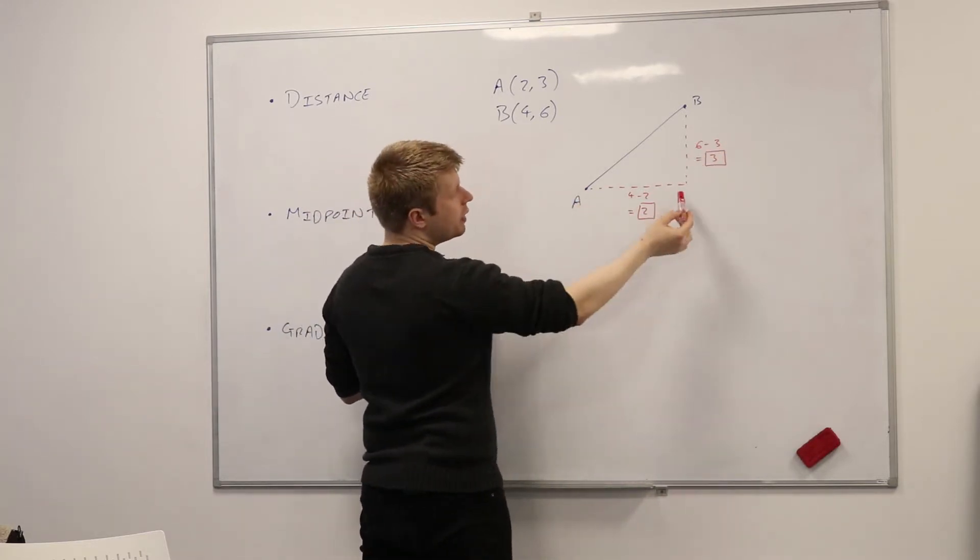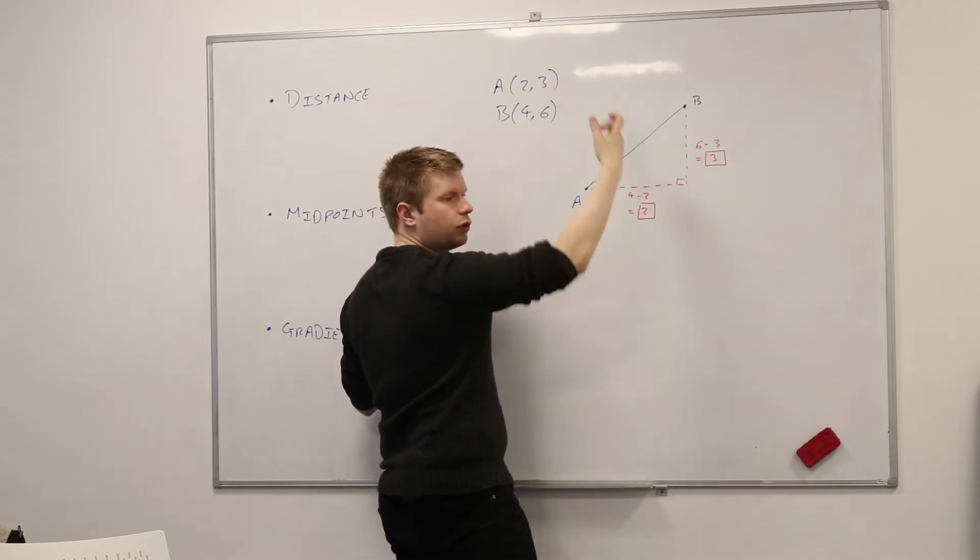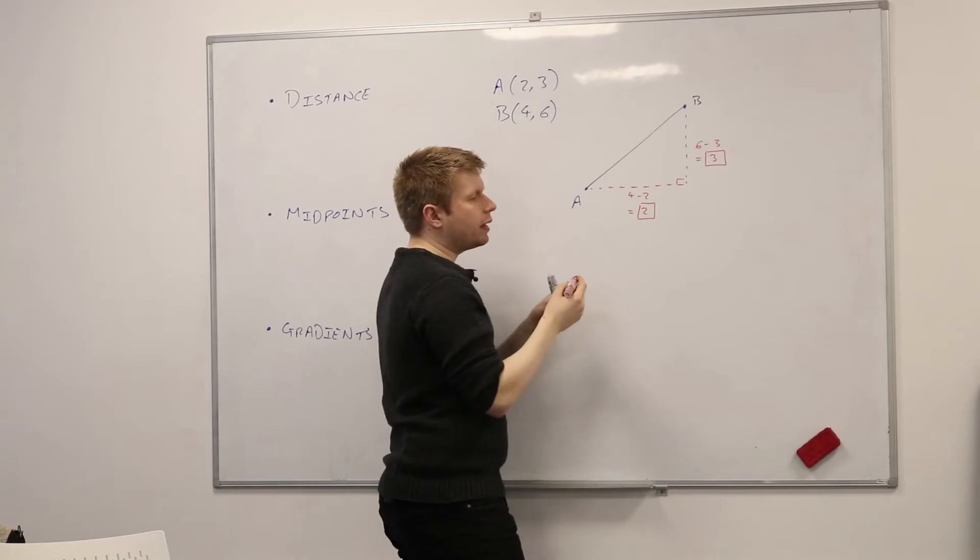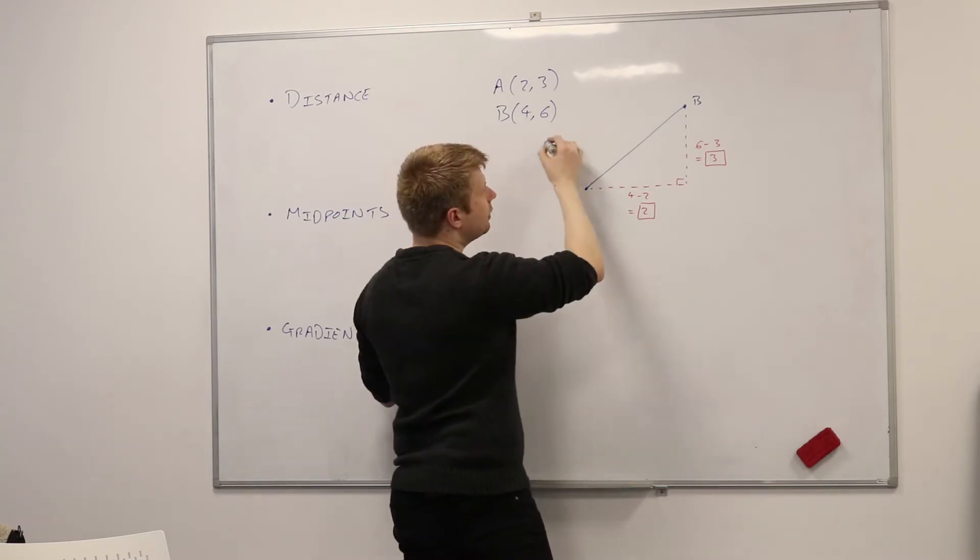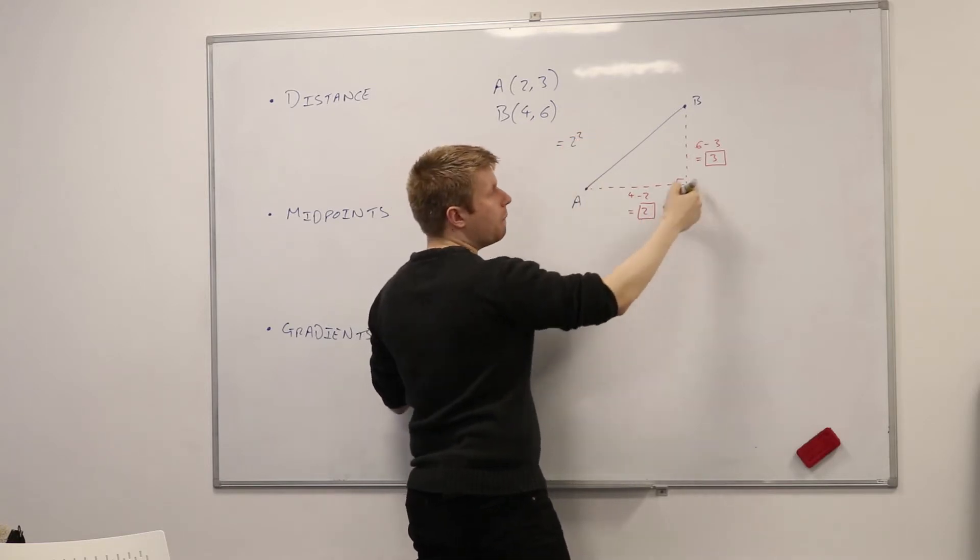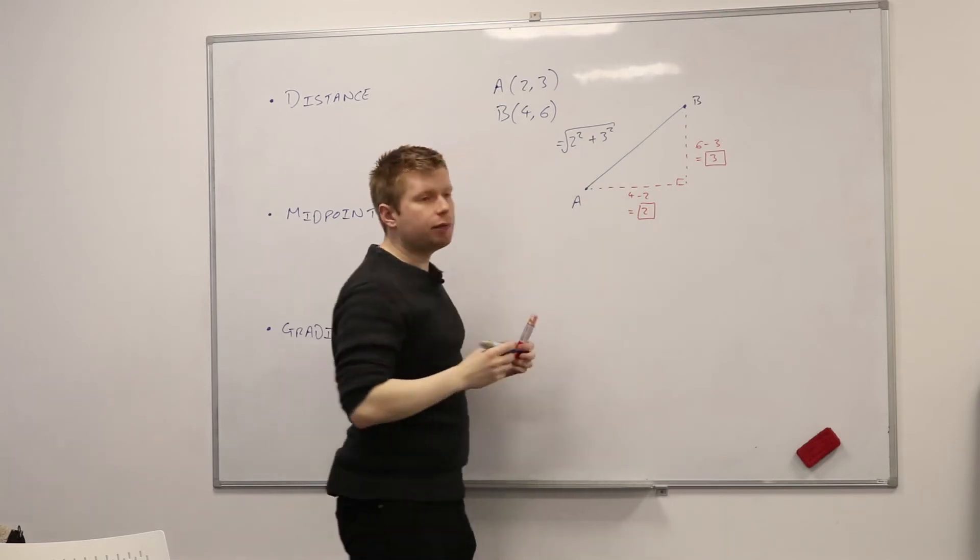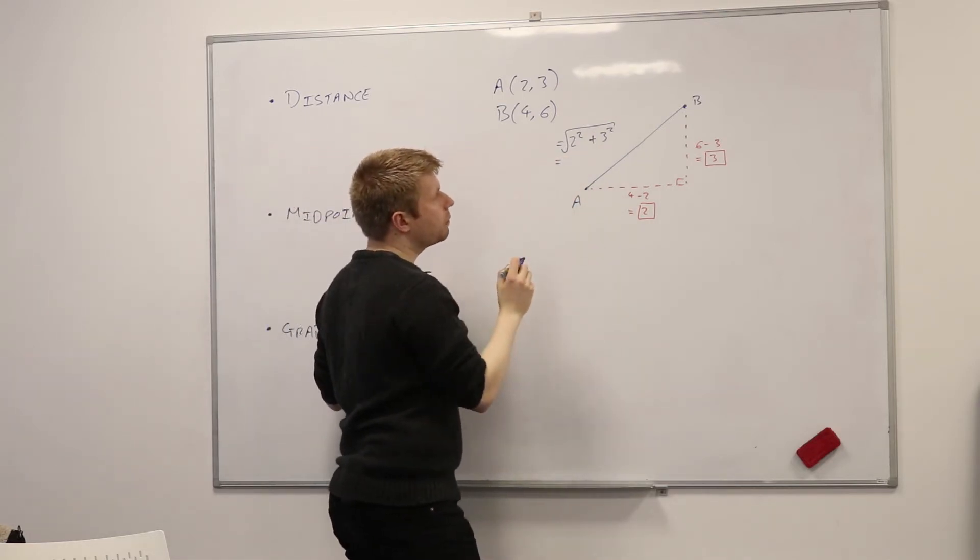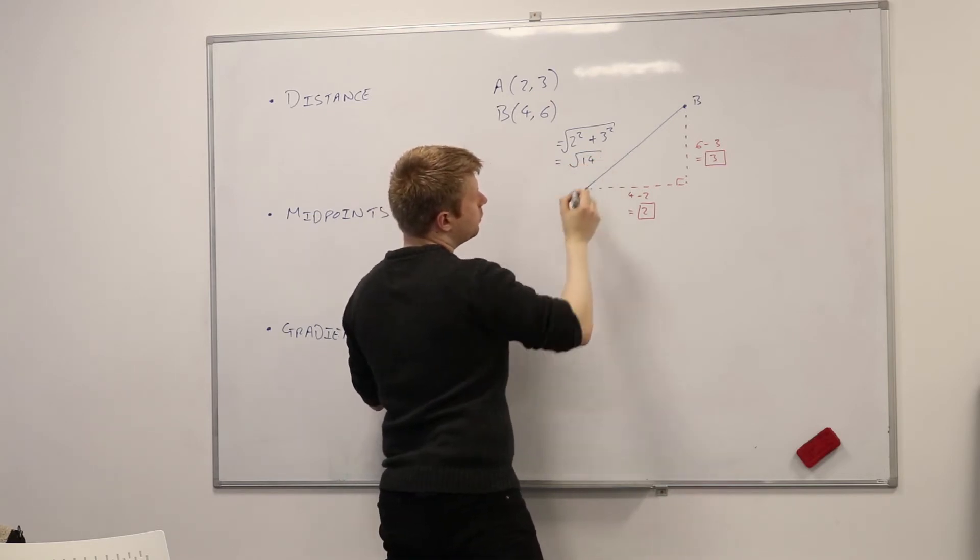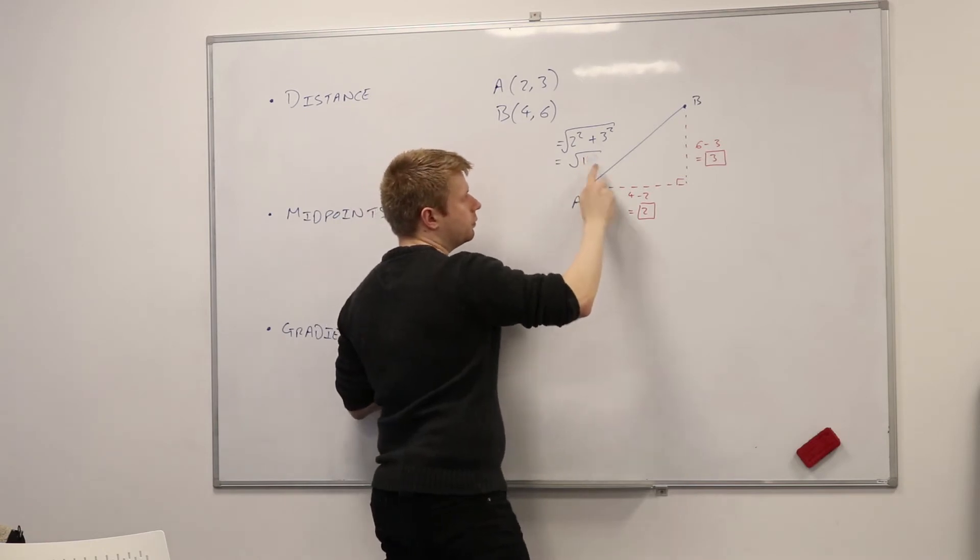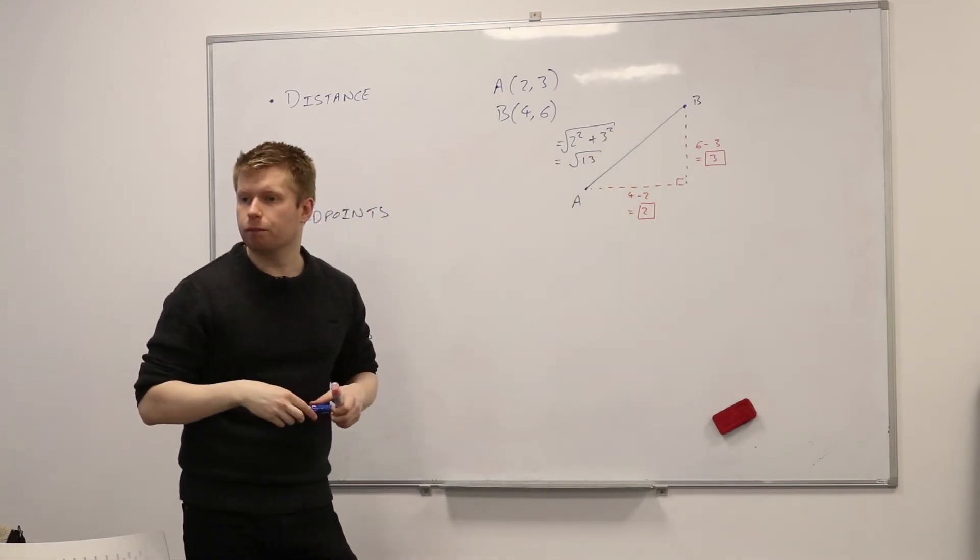So I know that this length here is two. This length here is three. What type of triangle have I got there? Yeah, it's right angle. Because I know that the x-axis and the y-axis are perpendicular to each other. So therefore, if I want to find the length of that side there, how would I do it? How does Pythagoras' theorem work? Yeah, so I'd take two squared, that distance squared, plus that distance squared, and that should be that distance squared. I don't want that distance squared, so I can take the square root of it to leave me with whatever that distance is. So as an exact answer, what would that be? So four squared plus three squared, what's that? Thirteen. So that distance there would be the square root of 13, which is about 3.61. Is that okay?